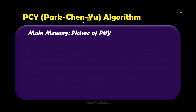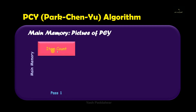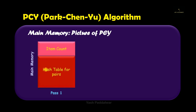Now let's have a look at the main memory representation of the PCY algorithm. Basically the PCY algorithm takes place in two passes and it consumes the main memory. In the first pass we have two things. The first is the item count — the count of the occurrence of each and every item present inside the basket. The item count takes a small amount of main memory and it is important because it helps to prune the infrequent item sets. The next part of main memory in pass one is the hash table for the pairs. Once all the items satisfying the threshold condition are taken forward, pairs are generated and the hash table for those pairs is generated and stored in the main memory.